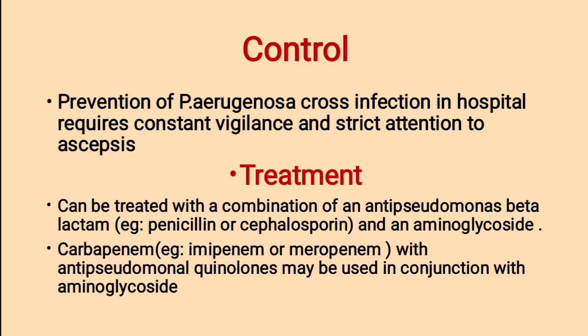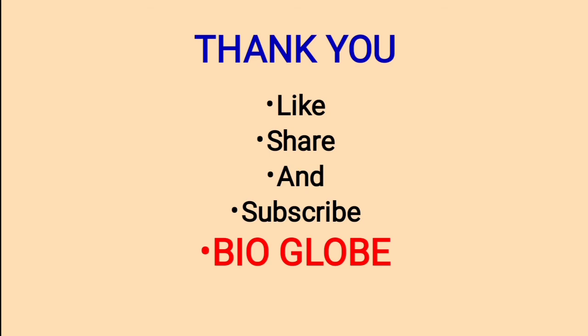Prevention of Pseudomonas aeruginosa cross-infection in hospitals requires constant vigilance and strict attention to asepsis. Treatment: can be treated with a combination of an anti-pseudomonas beta-lactam and an aminoglycoside. The beta-lactam includes penicillin or cephalosporin. Carbapenems, for example imipenem or meropenem, with anti-pseudomonas quinolones may be used in conjunction with aminoglycosides. These are all about Pseudomonas aeruginosa. Thank you for watching this video. If you like this video, please like, share and subscribe.